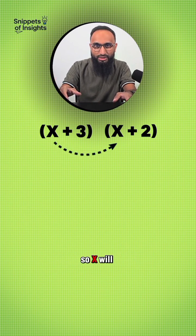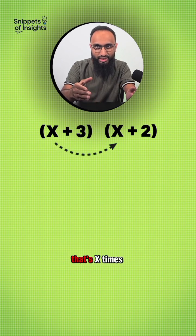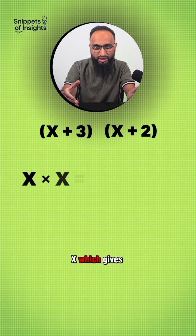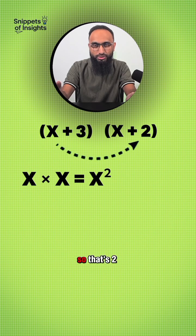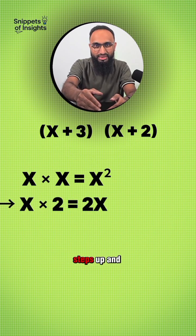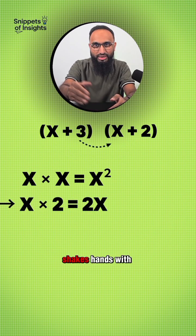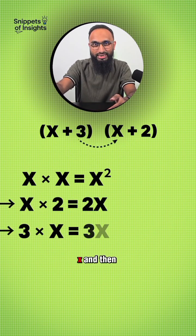So x will shake hands with x — that's x times x, which gives us x squared. Then x shakes hands with two, so that's 2x. Then three steps up and shakes hands with x, so that's 3x.